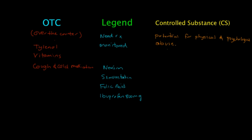A few other names these are known by include schedule drugs, control drugs, or controlled medications. A few examples could be Valium, Xanax, Ambien, or Adderall — these are all going to be controlled substances.